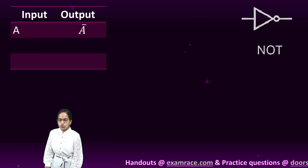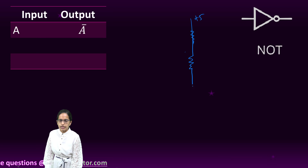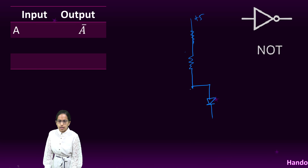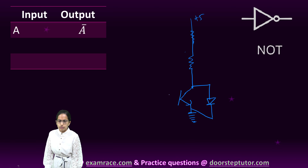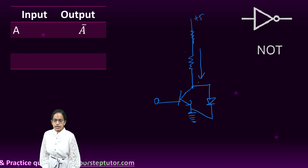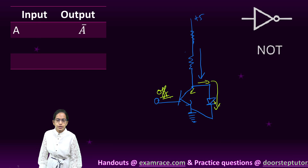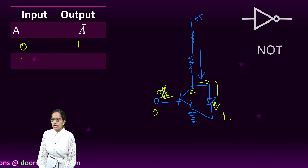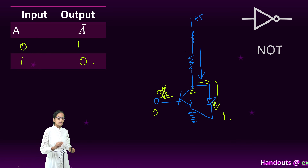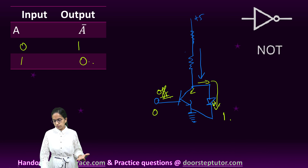Now let's take another example. I have 5 volts and the resistor, the LED, and then the collector, base, and emitter of the transistor, finally grounded. The current has an option to go either way, but since my input is off the current follows the LED path and the LED would be on. So if input is 0 the output is 1, and if input is 1 the output is 0. This is the NOT gate — a simple inversion, which is the basic principle used in an inverter.